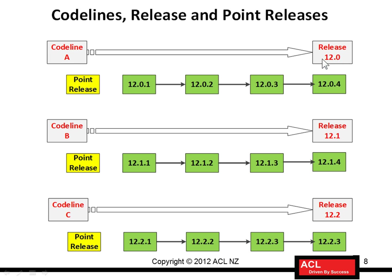I'm sure you know the concept of releases — release 12.0, release 12.1, release 12.2. Now each of these releases is associated with something called a code line. Oracle associates and designates each release with a code line letter. From release 12.0 onwards, Oracle has named each code line as A, B, or C. So for 12.0 the code line is A, for 12.1 the code line is B, and for 12.2 the code line is C.